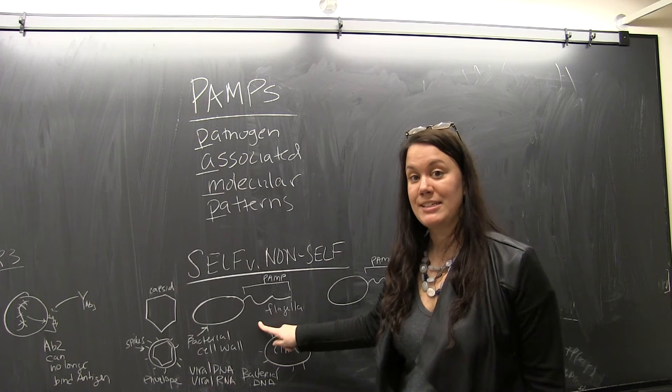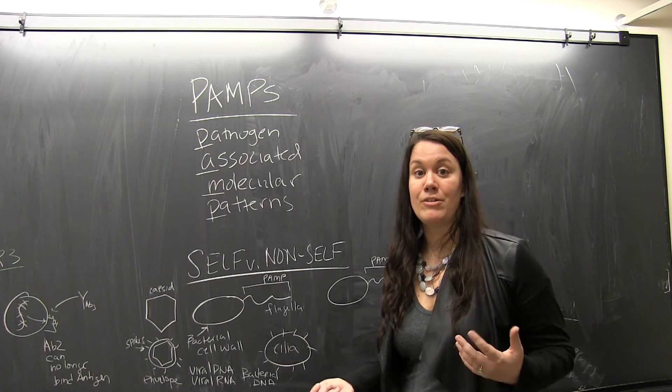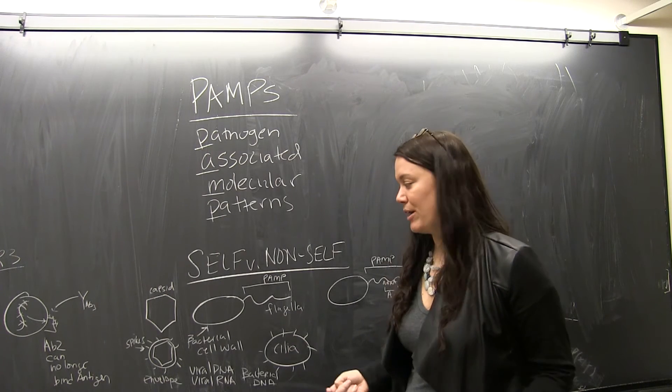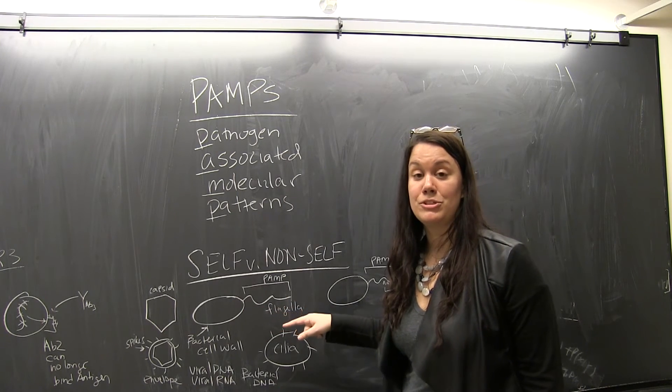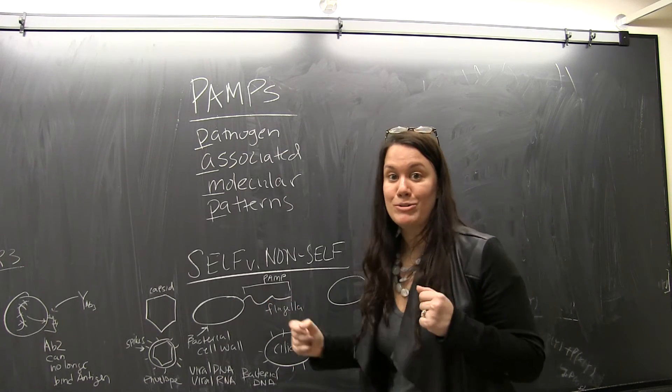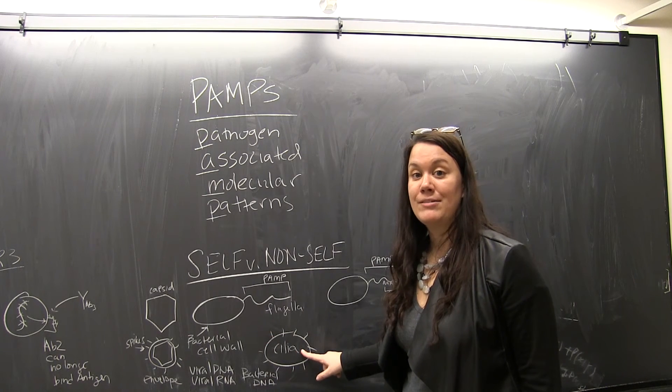When we're talking about bacteria, the cell wall of bacteria is very different from our own animal cell membranes. Some bacteria also have a flagella, which is used to be motile in movement.